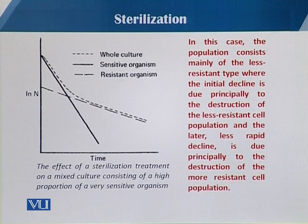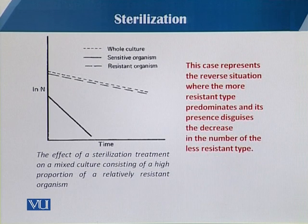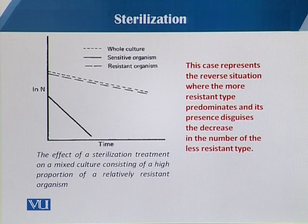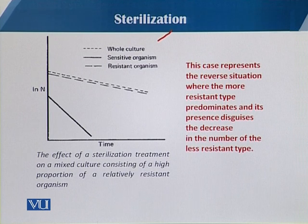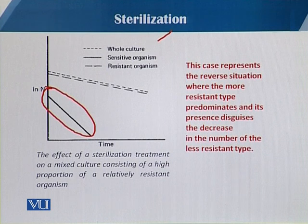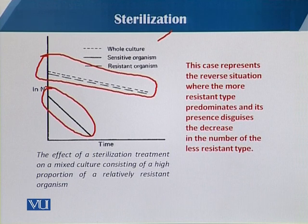In the next case, when the culture has the most resistant population in the fermentation medium, you can see the whole culture, the sensitive organisms, and the resistant organisms plotted. As concerned, when most of the contaminants are resistant, this kind of relationship is seen after heat treatment.